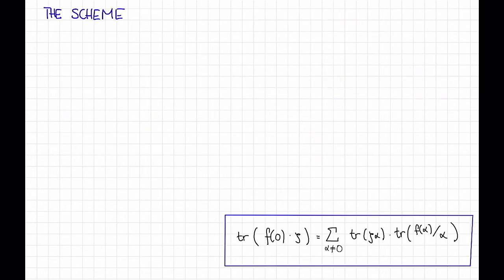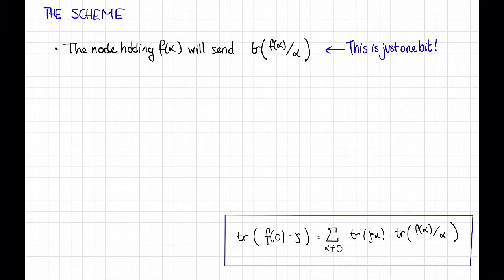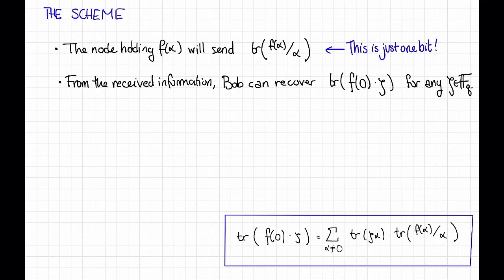Okay, so here's the scheme. I've just copied the formula that we got on the previous slide down here. This scheme is that the node that is holding f of alpha is going to send this bit, the trace of f of alpha divided by alpha. Notice that that's just one bit because the trace maps f2 to the t down to f2. And I claim that from this information, we can now recover trace of f of 0 times zeta for any zeta that we like. The reason is that this thing here does not depend on zeta. So all of the servers send this thing, and then Bob can take the linear combination of those things with these coefficients, those do depend on zeta, and come up with the trace of f of 0 times zeta.